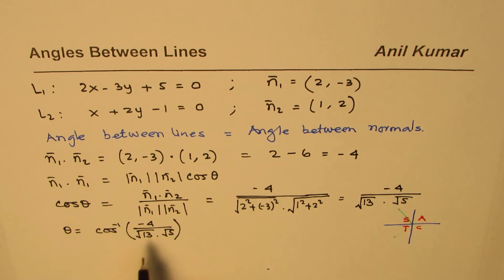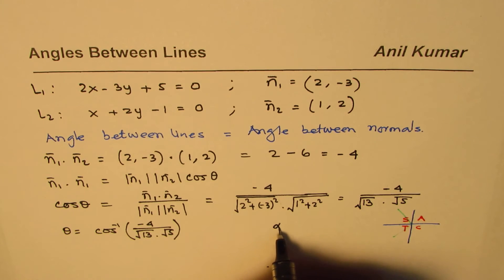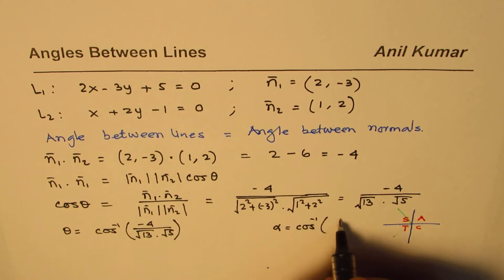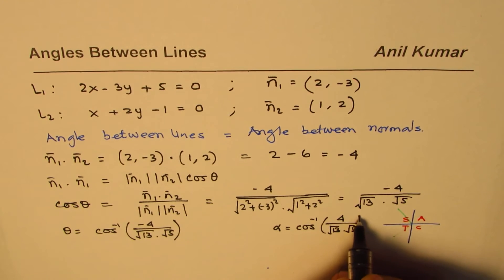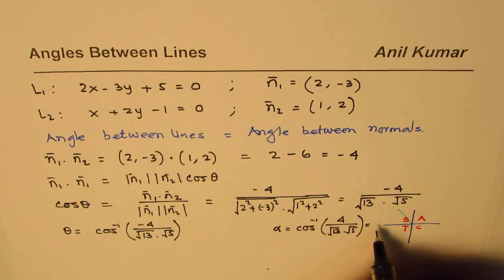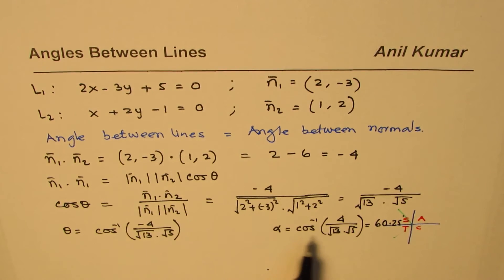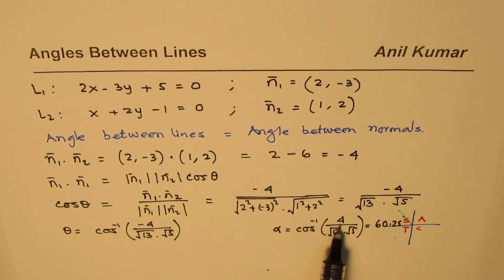So what we really found was, we found the related acute angle, which was cos inverse of 4 divided by square root of 13 times square root of 5. So that gave us 60.25, that gives us 60.25 degrees. So that is for the principal angle.